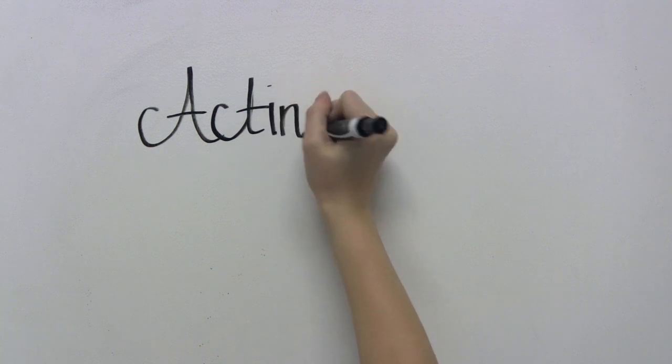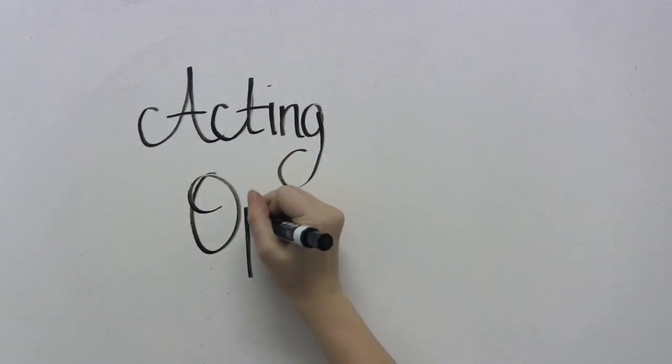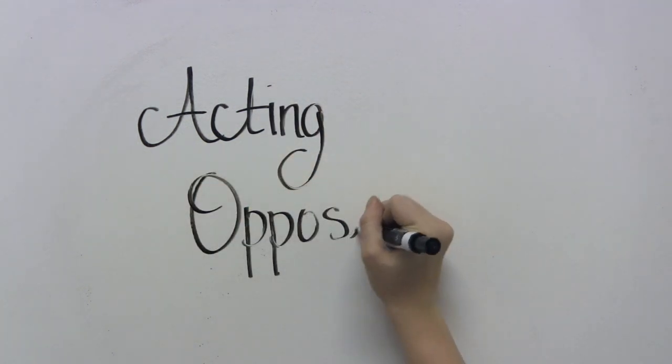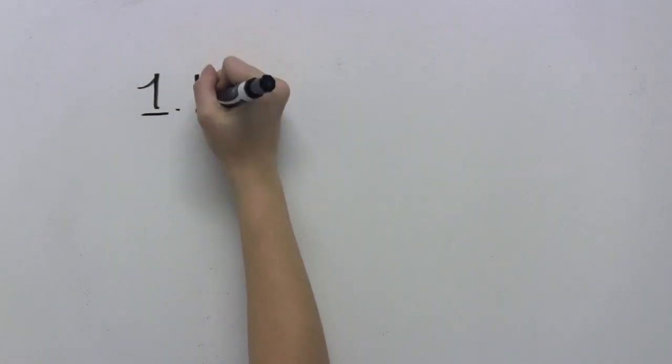Acting opposite means doing the opposite of what you feel like doing. Before we can do this, we must first identify and name the emotions we are feeling.